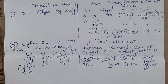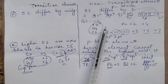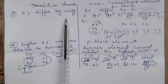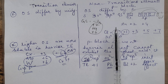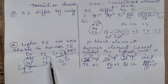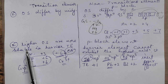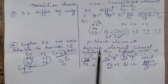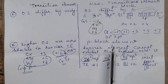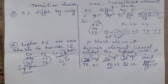So if you are asked to compare the oxidation states of transition with non-transition elements, you will write these two differences: oxidation states differ by unity in transition elements and by 2 in non-transition elements; and second, in transition elements the heavier elements can exhibit the highest oxidation state, whereas in non-transition elements the heavier element cannot exhibit the highest oxidation state because of the inert pair effect.